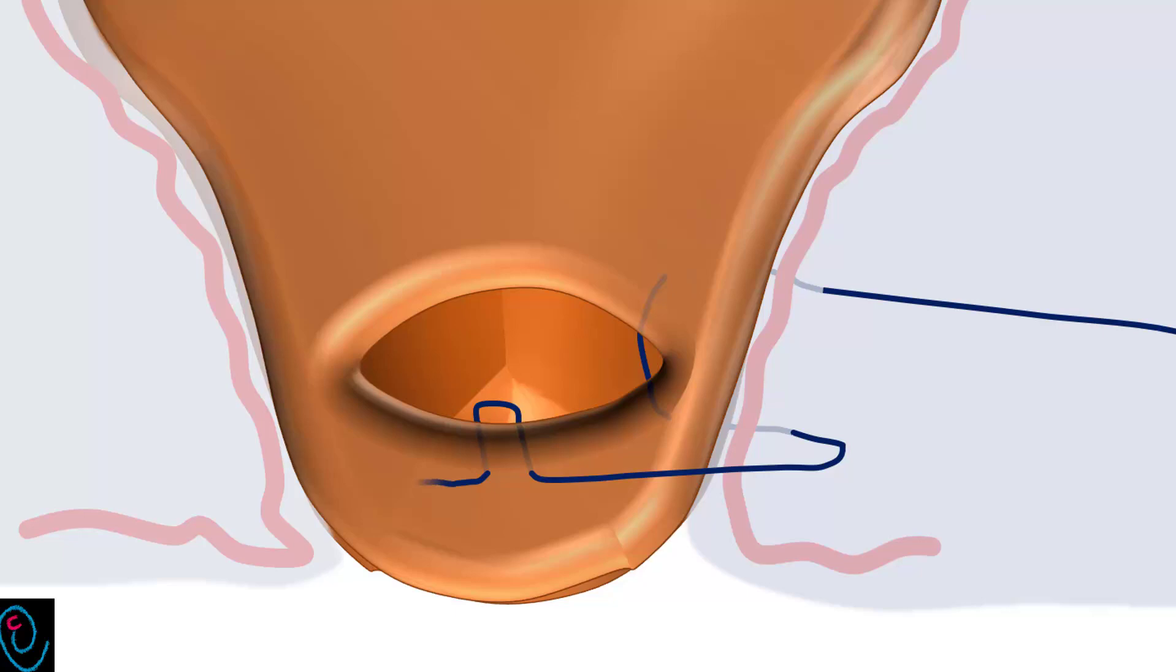On the other side of the uterus, pass behind the uterine artery and puncture the posterior wall of the uterus 3 centimeters below the incision. Then puncture the posterior wall of the uterus again 3 centimeters above the incision and exit behind the uterine artery.